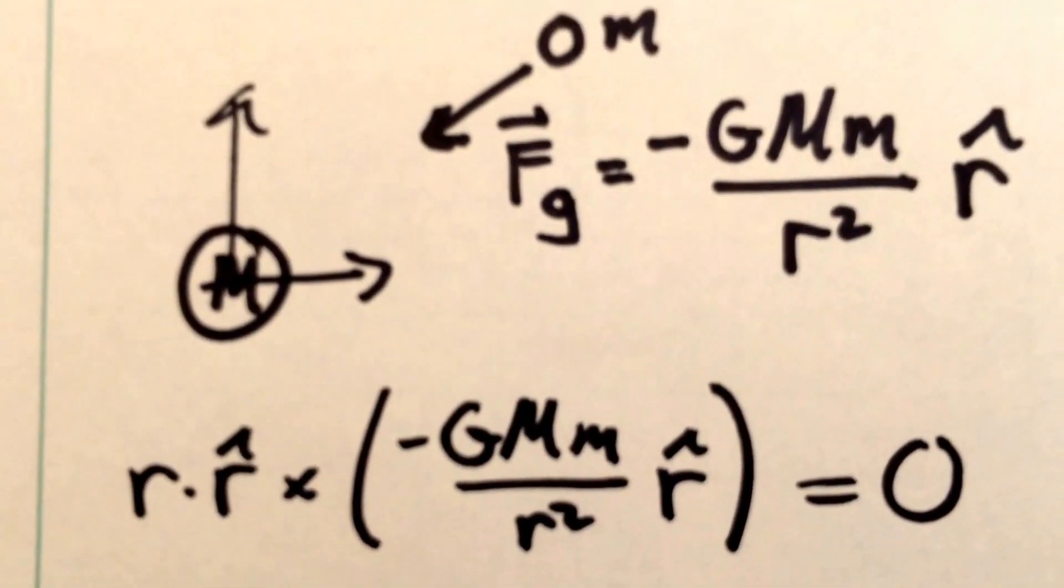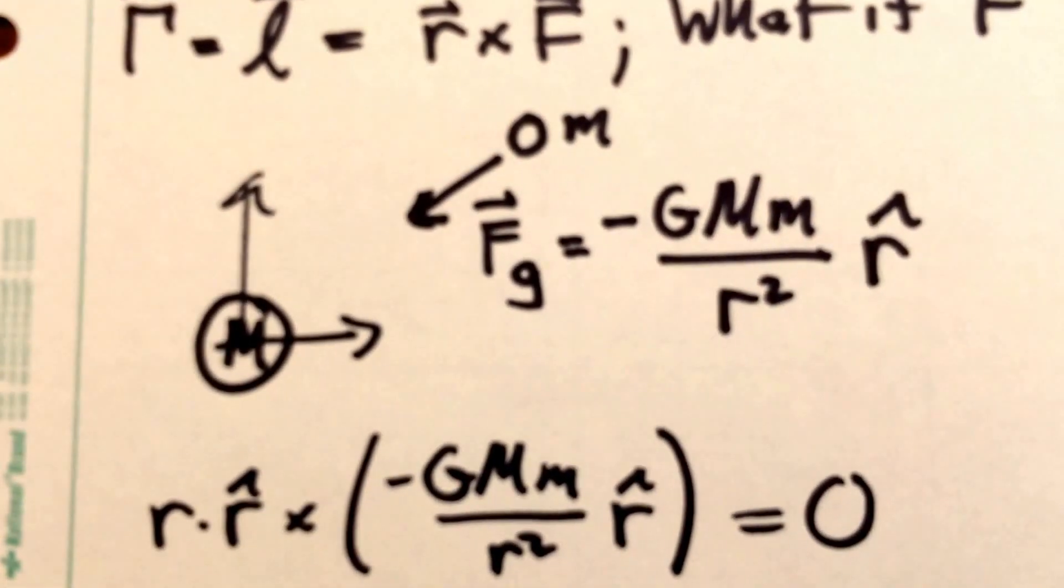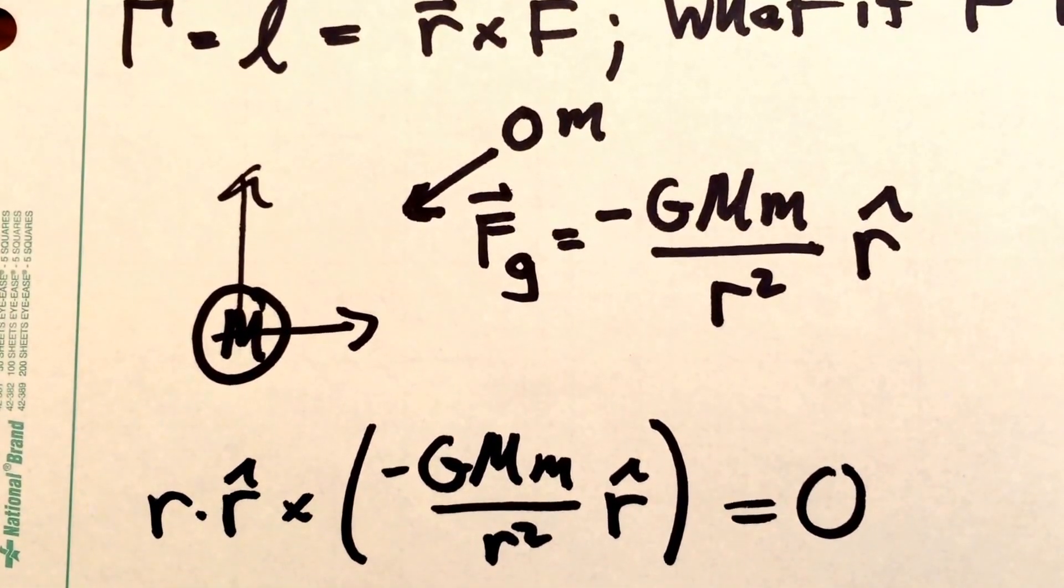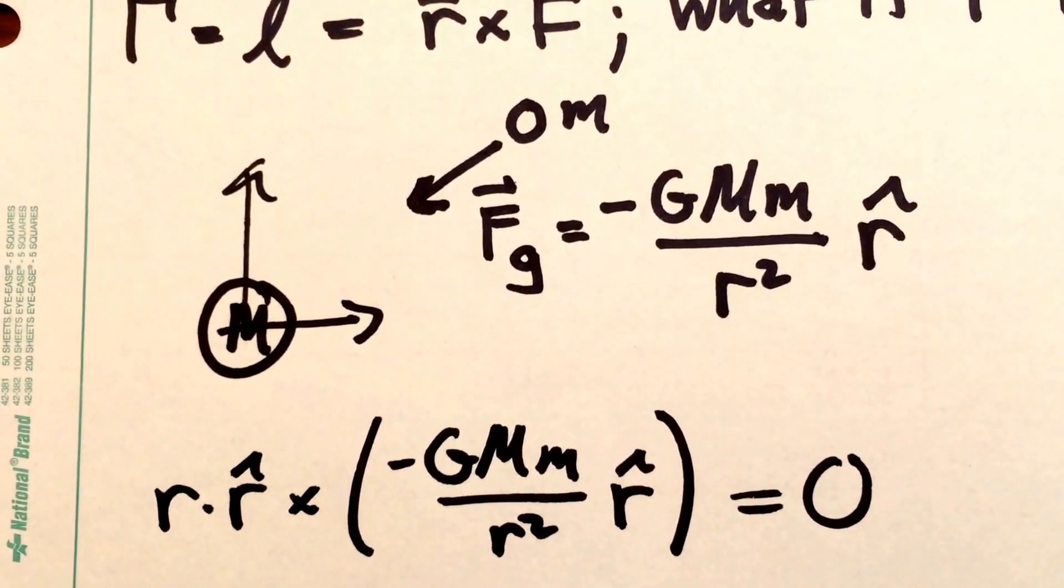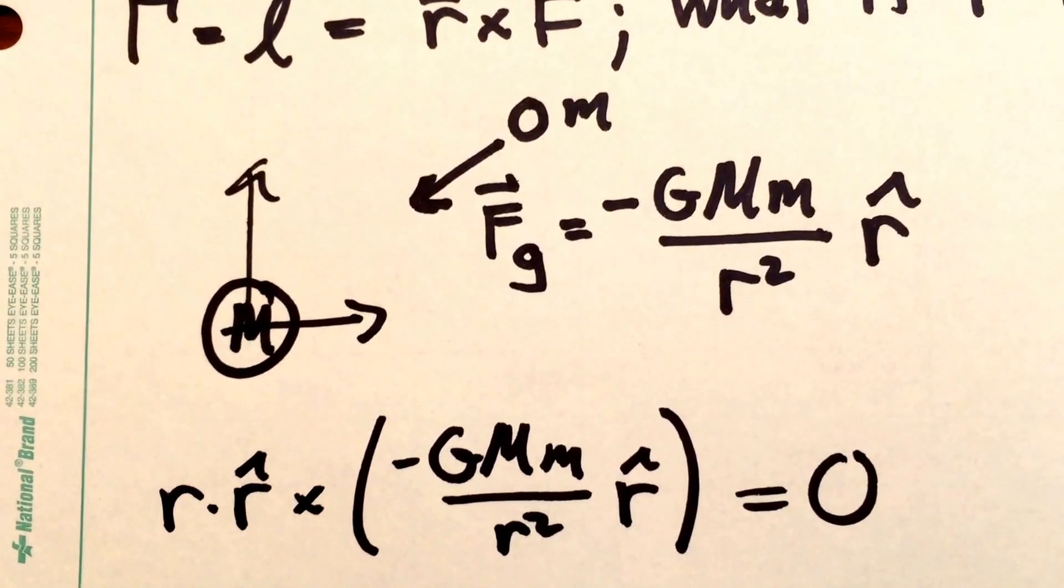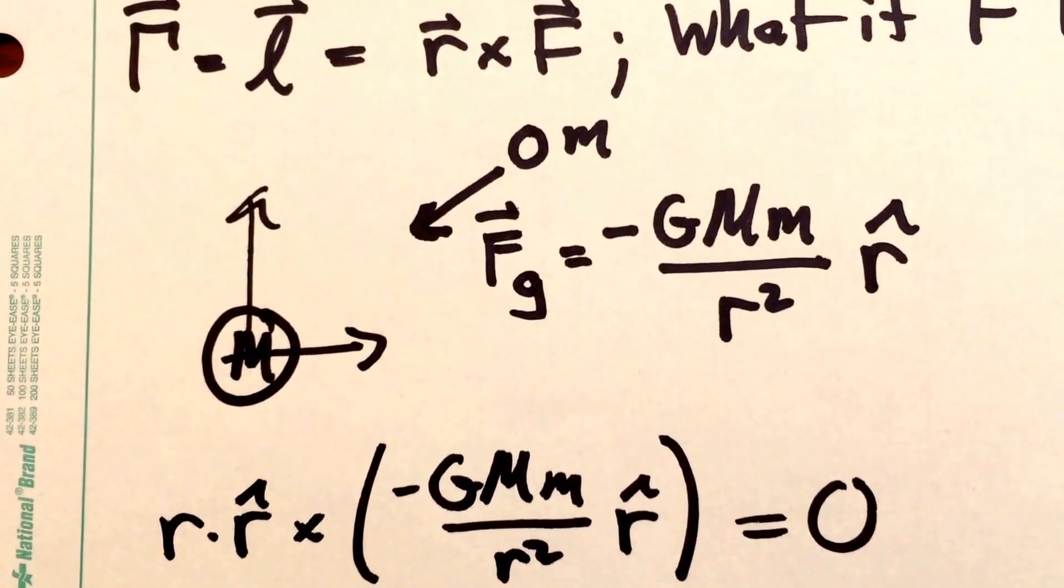And so this is a case where the linear momentum of particle little m is not going to be conserved. That is, there is a non-zero force, but because that force lies along the radius vector, this force conserves angular momentum. So linear momentum is not conserved, angular momentum is.